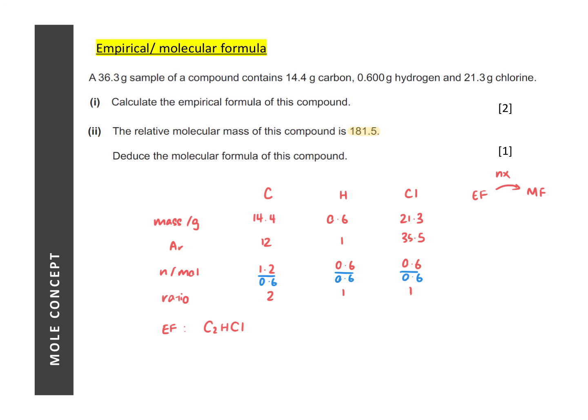And we can find the value of N by simply comparing the relative molecular mass and the mass given by the empirical formula. So the relative molecular mass is 181.5 and the mass given by the empirical formula would be 12 times 2 plus 1 plus 35.5 and that would give us a value of 3. Meaning your molecular formula is 3 times that of your empirical formula. So the molecular formula will be C6H3Cl3.